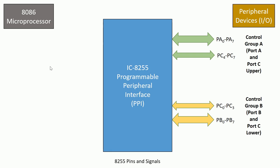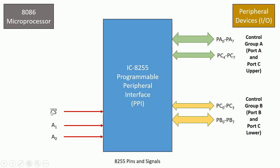All ports and the control register need to be controlled by the microprocessor. There are two signals A1 and A0 along with CS bar (Chip Select, active low). In the 8086 microprocessor there are 20 address lines; the lower two, A0 and A1, are used to select among Port A, Port B, Port C, or the control register. Two lines give four permutation combinations, and Chip Select is used to activate the IC.